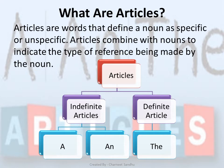Articles are words that define a noun as specific or unspecific. Articles combine with nouns to indicate the type of reference being made by the noun. An article is a word which is used to modify a noun, which is a person, place, object or an idea.